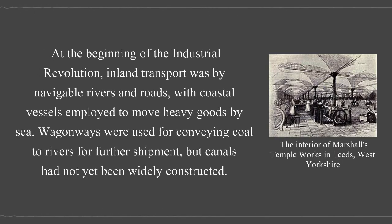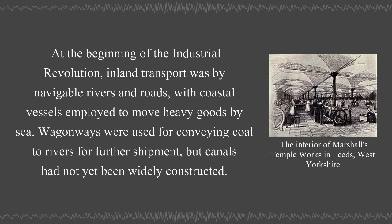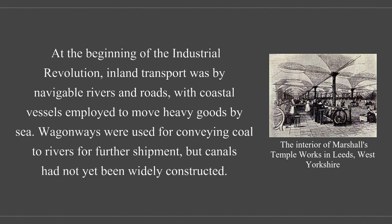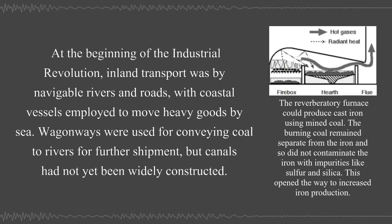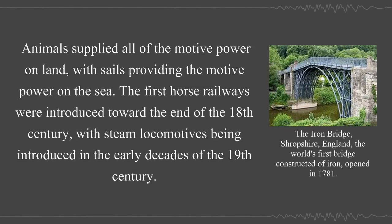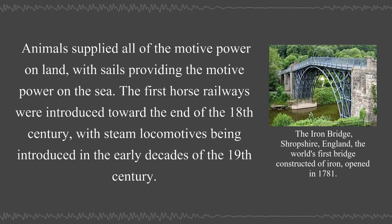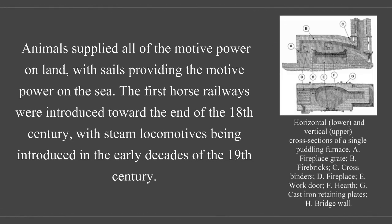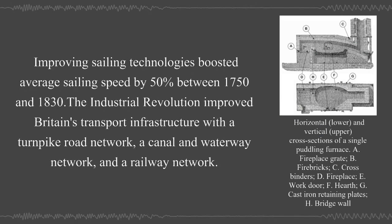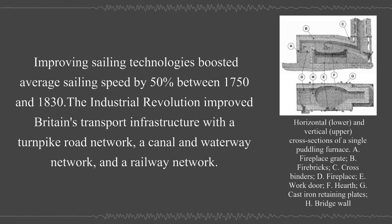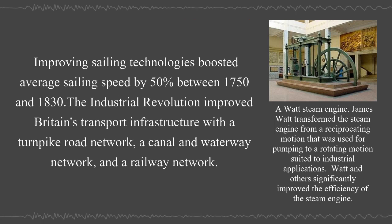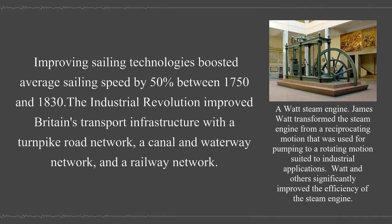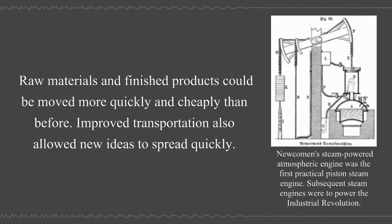At the beginning of the Industrial Revolution, inland transport was by navigable rivers and roads, with coastal vessels employed to move heavy goods by sea. Wagonways were used for conveying coal to rivers for further shipment, but canals had not yet been widely constructed. Animals supplied all of the motive power on land, with sails providing the motive power on the sea. The first horse railways were introduced toward the end of the 18th century, with steam locomotives being introduced in the early decades of the 19th century. The Industrial Revolution improved Britain's transport infrastructure with a turnpike road network, a canal and waterway network, and a railway network. Raw materials and finished products could be moved more quickly and cheaply than before, and improved transportation also allowed new ideas to spread quickly.